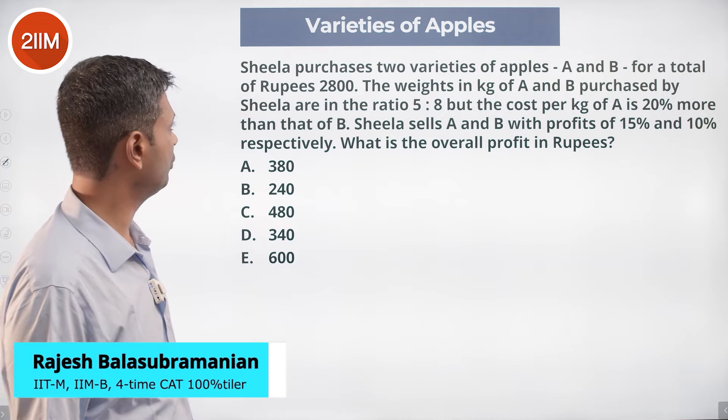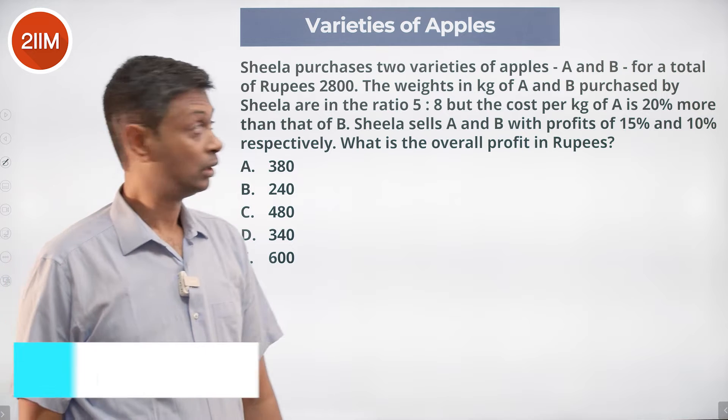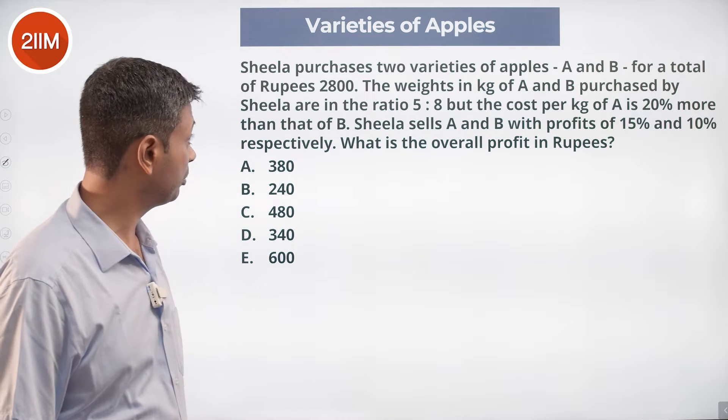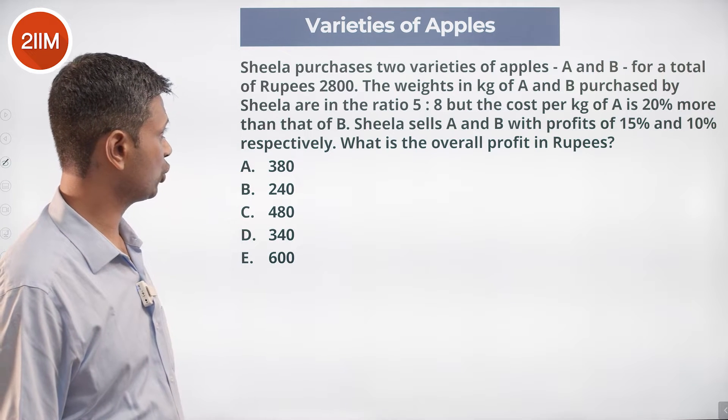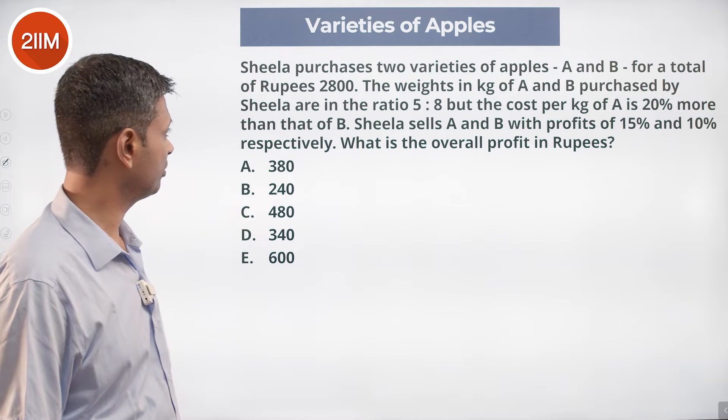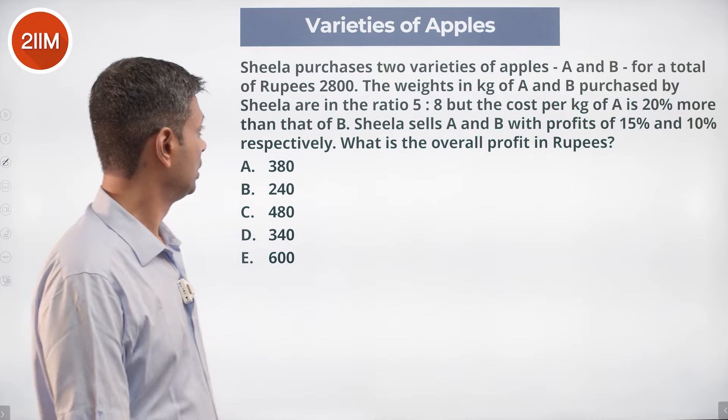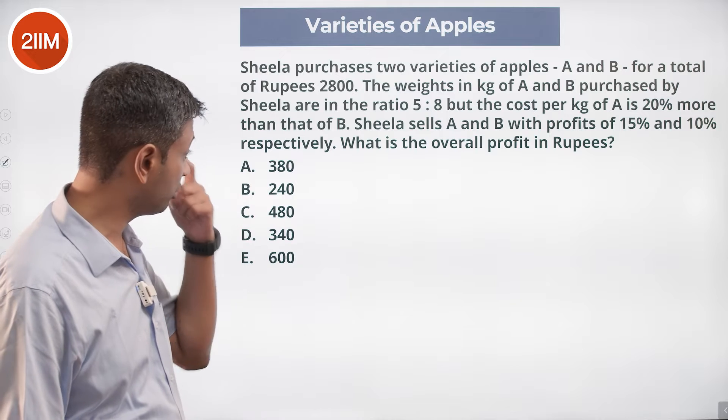Sheila purchases two varieties of apples, A and B, for a total of rupees 2800. The weights in kilograms of A and B purchased by Sheila are in the ratio 5:8, but the cost per kilogram of A is 20% more than that of B. Sheila sells A and B with profits of 15% and 10% respectively. What's the overall profit in rupees?